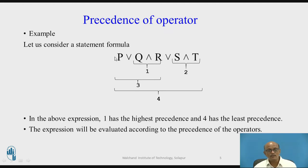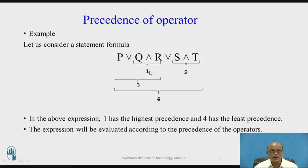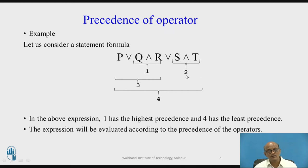To resolve this, we come to the left side of the formula and traverse from the left-hand side. Whichever AND comes first, that is Q AND R — this will be evaluated first, marked as 1. Then secondly, S AND T — this AND comes second, so this will be evaluated second.